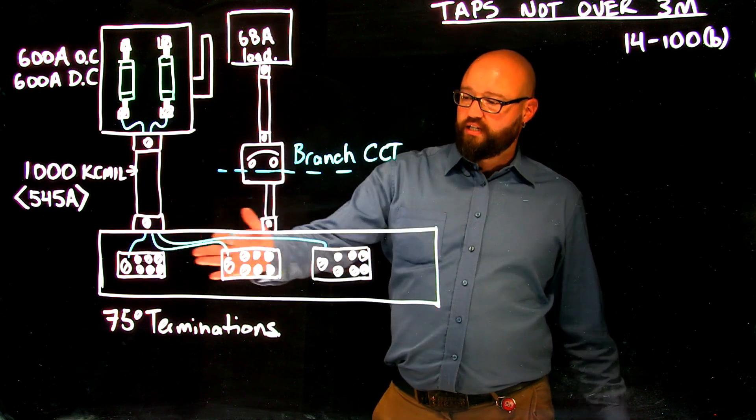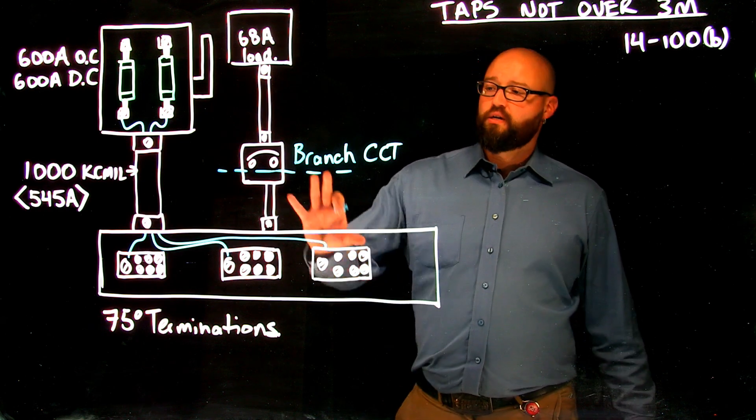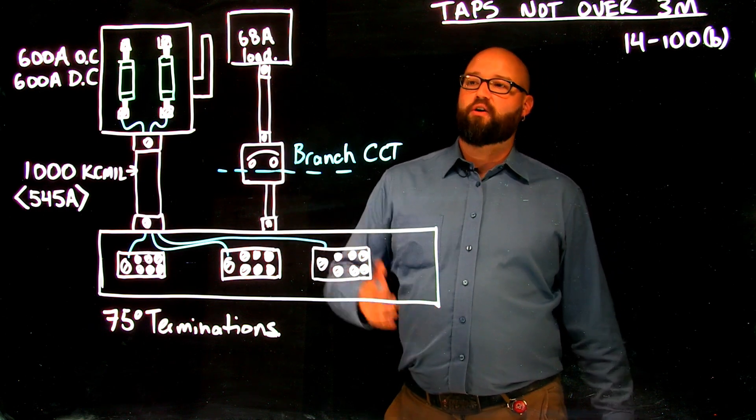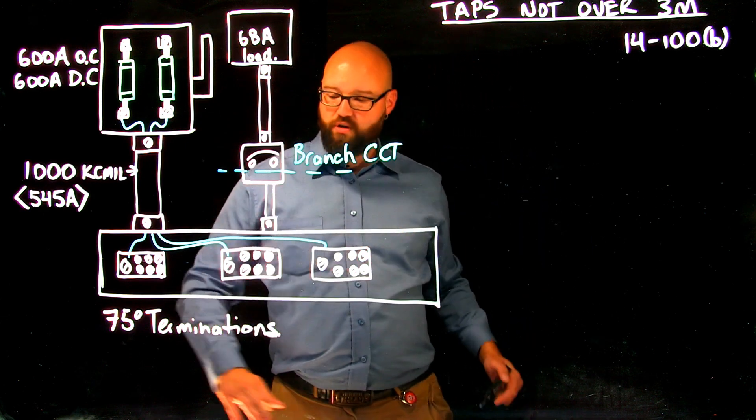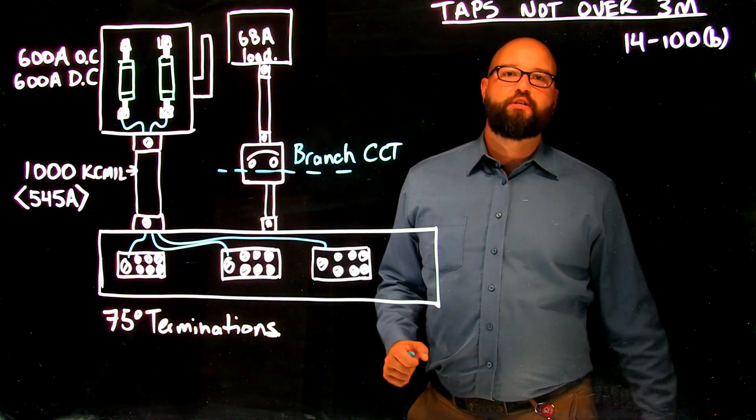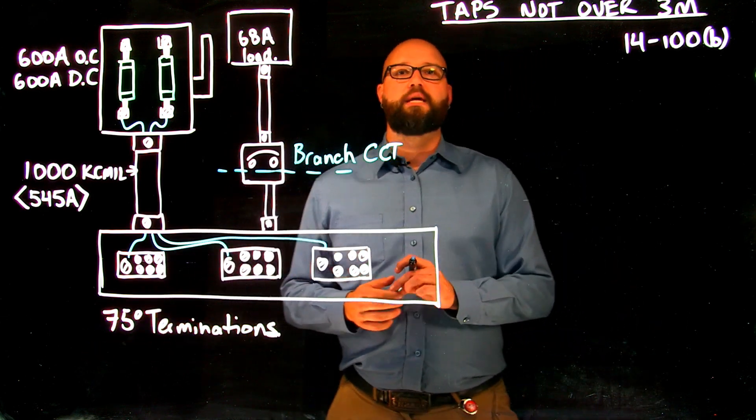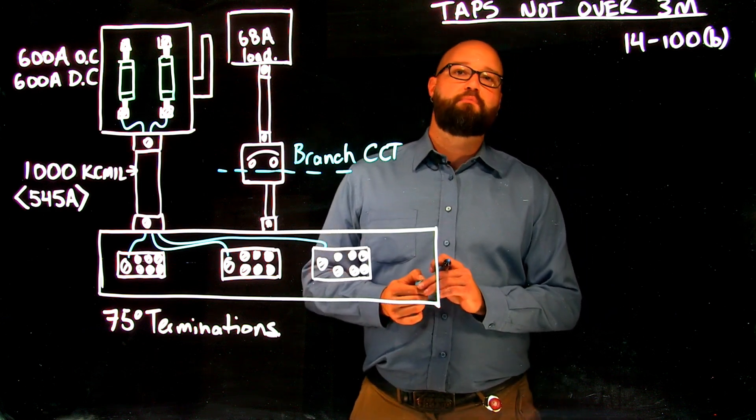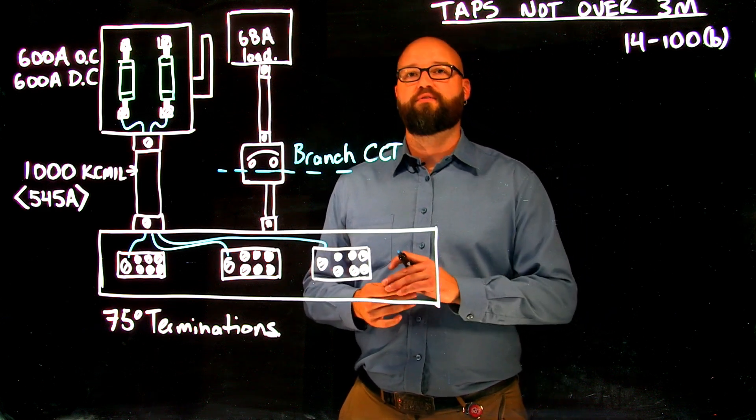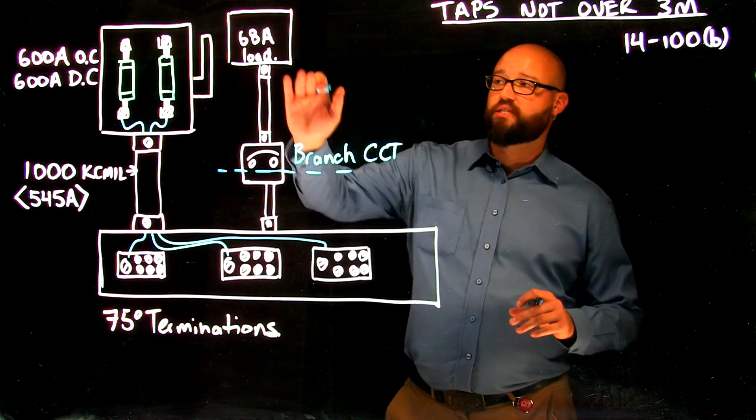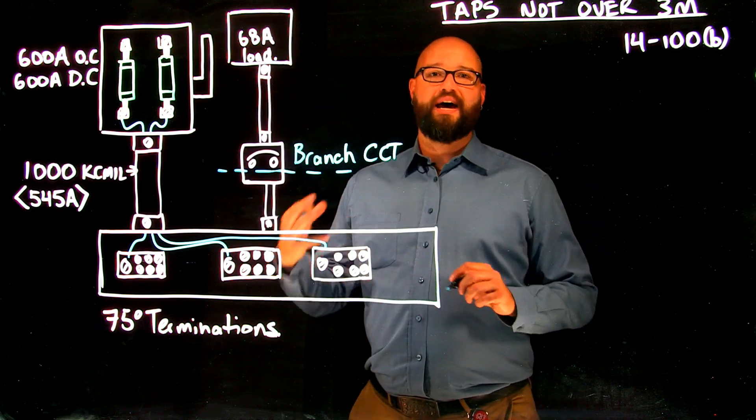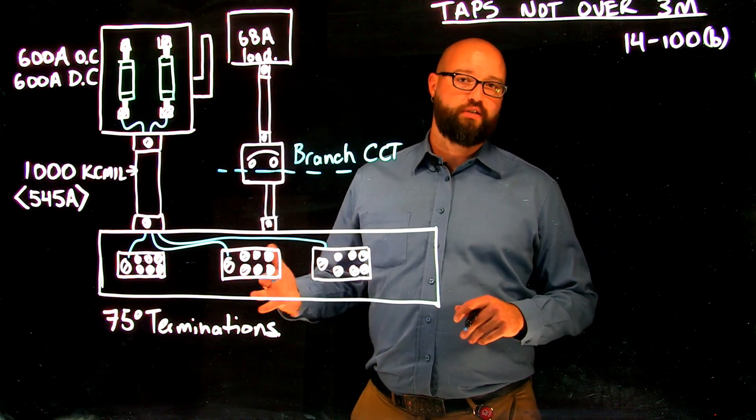So thousand KC mil up to our splitter. We're going to do a branch circuit calculation on this side. I have a 68 amp load. Note that we have 75 degree termination temperatures because we always need to keep 4006 in mind whenever we're selecting a conductor from table two.